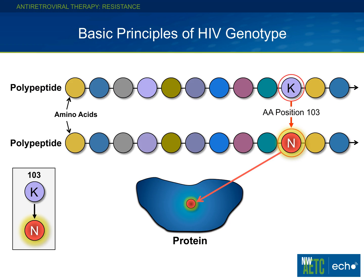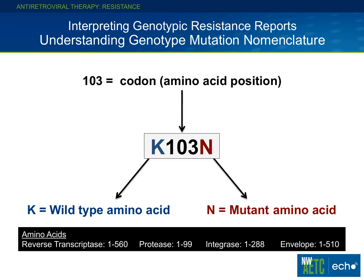The position of the amino acid is represented on the report: the wild-type or original amino acid is listed first, then the position, then the newly mutated amino acid. For example, the K at amino acid position 103 has been replaced by N — this appears on reports as a K103N mutation. The K is the wild-type amino acid, 103 is the position, and N is the mutant amino acid. For reference, the reverse transcriptase is a large enzyme at 560 amino acids, while the protease is fairly small at only 99 amino acids.